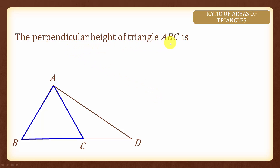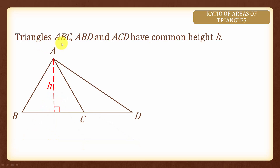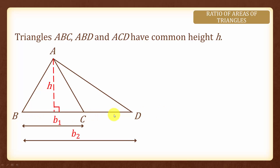What is the perpendicular height of triangle ABC? It will be this line here. What about the perpendicular height of the big triangle ABD? It will be this height here. And what about the perpendicular height of triangle ACD? It will be this height here. What you should notice is that triangles ABC, ABD, and ACD all share a common height H, and their respective bases will be B1, B2, and B3.